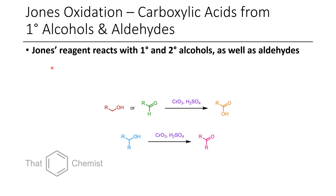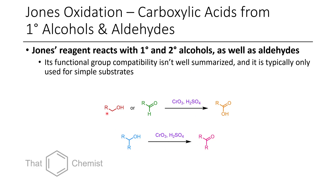So the Jones oxidation can form carboxylic acids from primary alcohols and aldehydes. However, Jones reagent will also react with secondary alcohols affording ketones. One thing I want to highlight is functional group compatibility — while this reaction has been done many times for different substrates, there isn't a good summary of which functional groups are tolerated and which aren't. Since sulfuric acid is used, it's likely that acid-sensitive functional groups would not be well tolerated. If you have a good reference for this, please share it in the comments and I'll pin it.